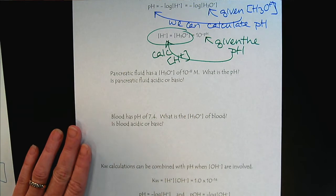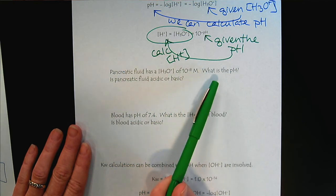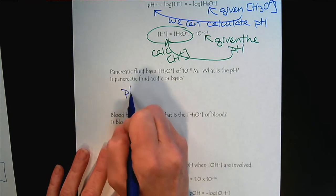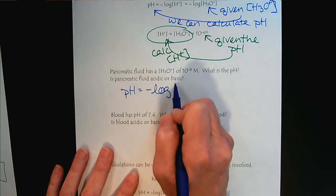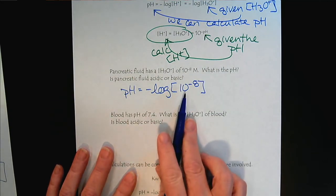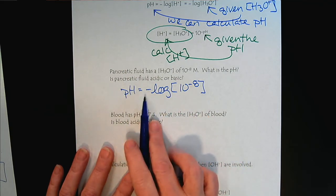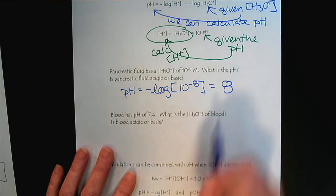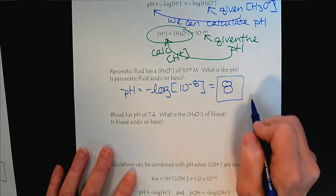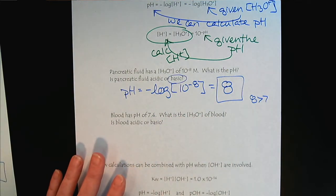Pancreatic fluid has a hydronium concentration of 10 to the minus 8 molar. What is the pH? So the pH is the negative log of 10 to the minus 8 molar. So you would plug into your calculator, 10 to the minus 8, take the log, and reverse the sign. And you should be able to do this really in your head. And so we would say that the pH is 8. And we recognize that 8 is greater than 7. So the pancreatic fluid is basic, slightly basic.